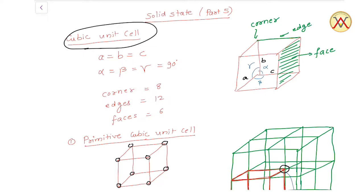एक cube में 8 corners होते हैं, 12 edges होती हैं, और 6 faces होते हैं.